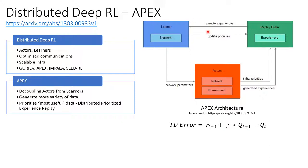In a nutshell, Apex uses distributed actor models which act on their own copy of the environment and share experiences to a common replay buffer. A single learner model samples experiences and updates the priorities. The actor networks are periodically updated with the latest network parameters.